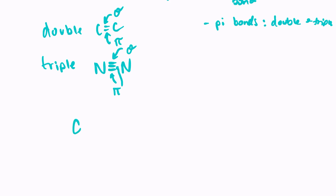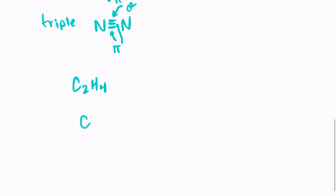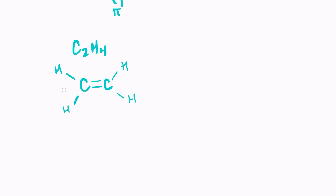What if you were given C2H4 and asked to identify how many sigma and pi bonds there are? Draw it out — two carbons and four hydrogens. Each carbon needs four bonds, so we put two hydrogens on either side, which means there has to be a double bond in the middle. All single bonds are sigma bonds, so we label those four as sigma. The top bond of the double bond is sigma and the bottom is pi, because a double bond contains one sigma and one pi bond.